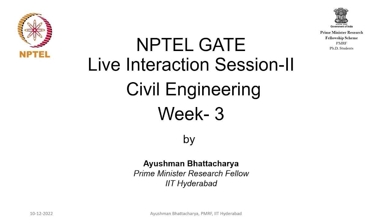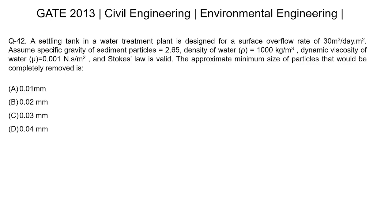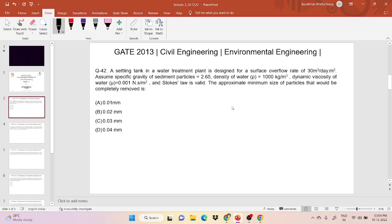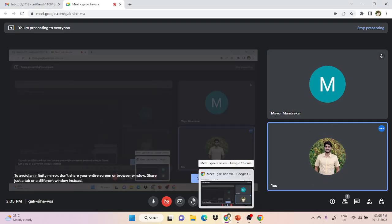Good evening everyone. This is week three, and in this session we will solve GATE previous year questions. The first question came in GATE 2013. A settling tank in a wastewater treatment plant is designed for a surface overflow rate of 30 meter cube per day per meter square. Assume specific gravity of the sediment particle is 2.65, density of water is 1000 kg per meter cube, dynamic viscosity of water is 0.001 Newton second per meter square, and Stokes law is valid. The approximate minimum size of particle that would be completely removed is?